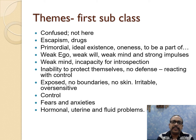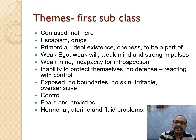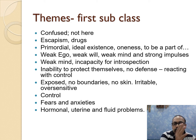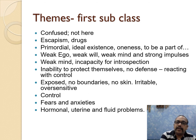There is a lot of confusion, escapism, a lot of drugs, primordials, ideal existence, weak ego, weak mind, inability to protect themselves, self-exposed, no boundaries, no skin. There are a lot of fears and anxiety, and a lot of feminine characters are there. Up to the third subclass, they are mainly feminine characters. In the fourth subclass, masculine parts start erupting, and in the fifth and sixth subclasses they are mostly masculine characters.